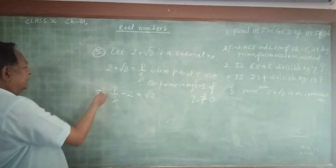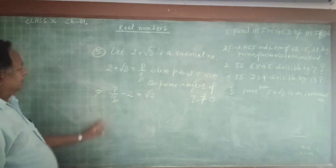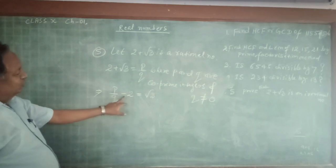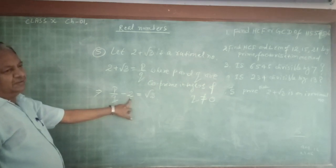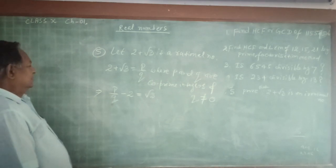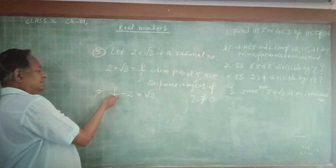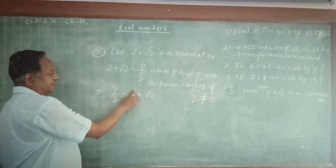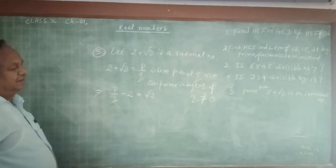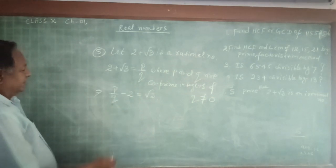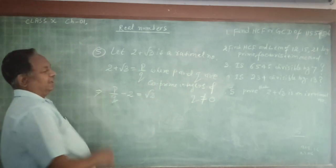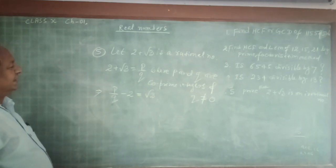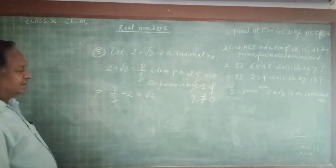Now left hand side: P by Q is a rational number. 2 is also a rational number. So when we subtract a rational number from a rational number, it is a rational number. Right hand side: root 3, as we proved earlier, it is an irrational number.